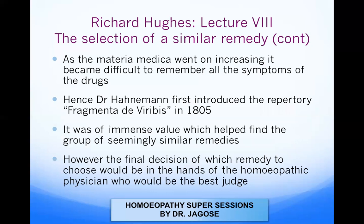As the materia medica grew, it became difficult to remember all symptoms of every drug. Hahnemann proved approximately 99 drugs in his lifetime, making it difficult to memorize all symptoms. Hence Hahnemann first introduced the repertory 'Fragment de Viribus Medicamentorum Positivis' in 1805, which was of immense value in helping find the group of seemingly similar remedies. Under each symptom, the group of remedies covering those symptoms were listed.